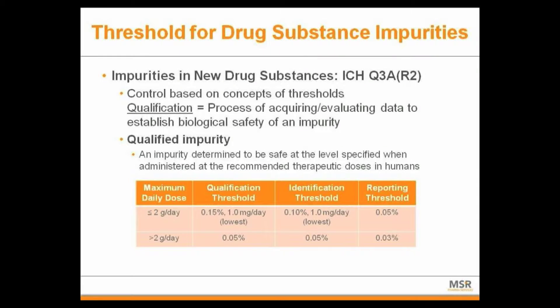What triggers a qualification, or a safety assessment, of a particular impurity is a threshold. With regard to qualification, if maximum daily dose is less than or equal to 2 grams per day, a typical threshold is 0.15%, or one milligram per day, whichever is the lowest. That triggers a qualification.